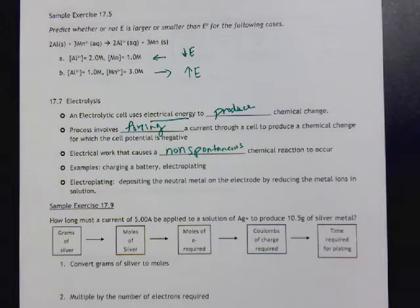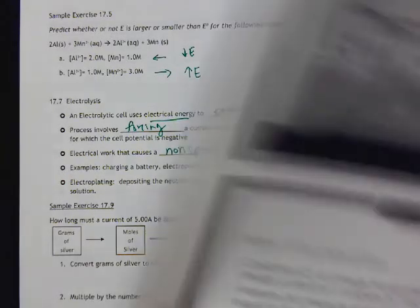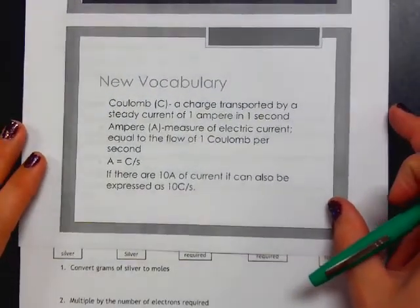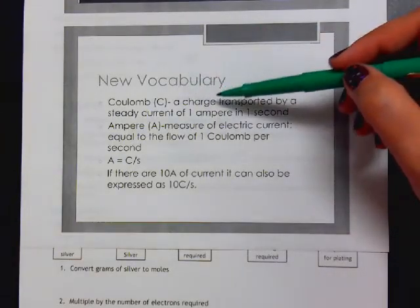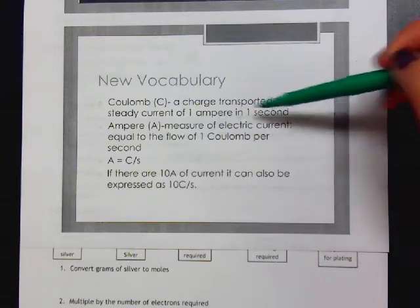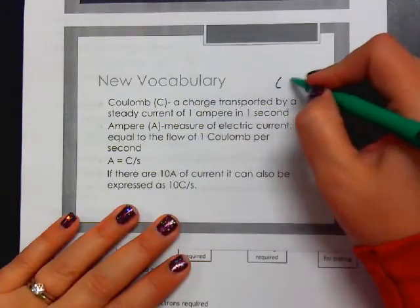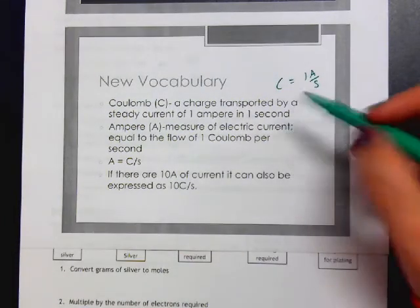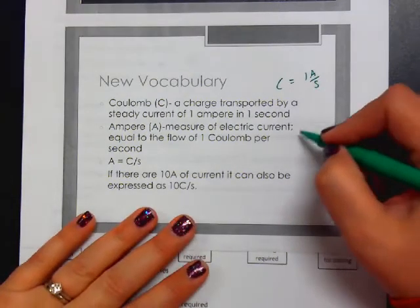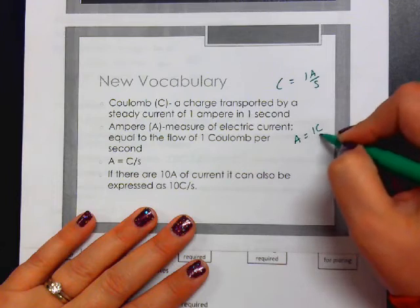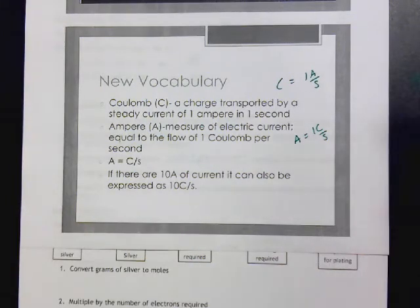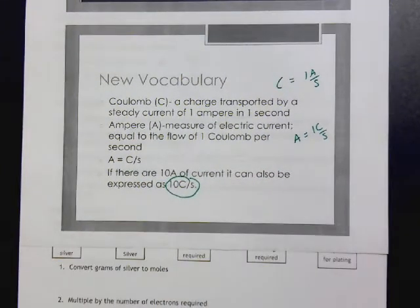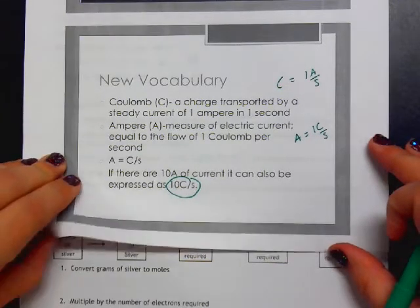We do have some new vocabulary that we want to look at. This vocabulary is not actually in your notes, but we want to make sure that we understand some things about vocabulary. A coulomb is a charge transported by a steady current of 1 amp in 1 second. So a coulomb is 1 amp per second. An amp is a measure of electrical current, and that is equal to 1 coulomb per second. So an amp is 1 coulomb per second. If there are 10 amps of current, it can also be expressed as 10 coulombs per second. That's important in the problems we're going to be looking at here in a moment.